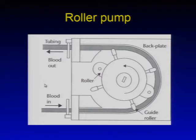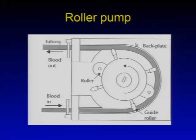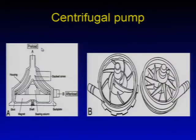The roller pump has an inlet, outlet, tubing, and a rotating roller against a back plate. When the roller rotates, it pushes the tubing against the back plate, which is the main driving force for propelling blood to the outlet. Centrifugal pumps are also commonly used nowadays and come in two types: cone type and vane type.